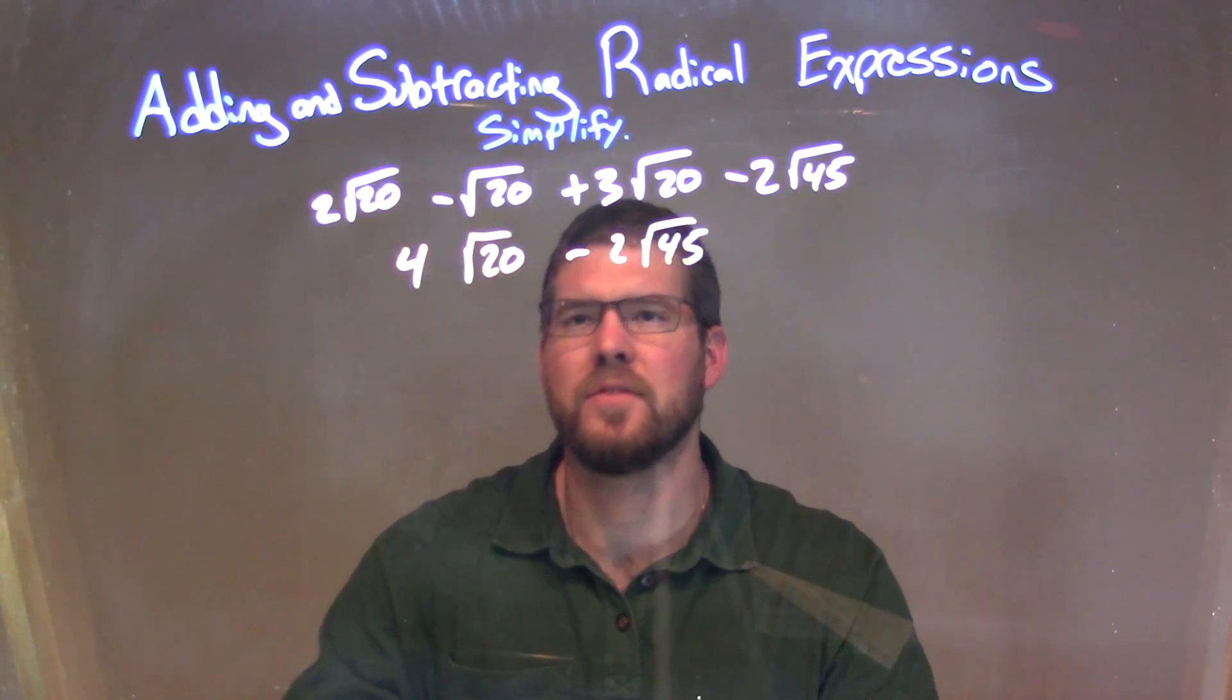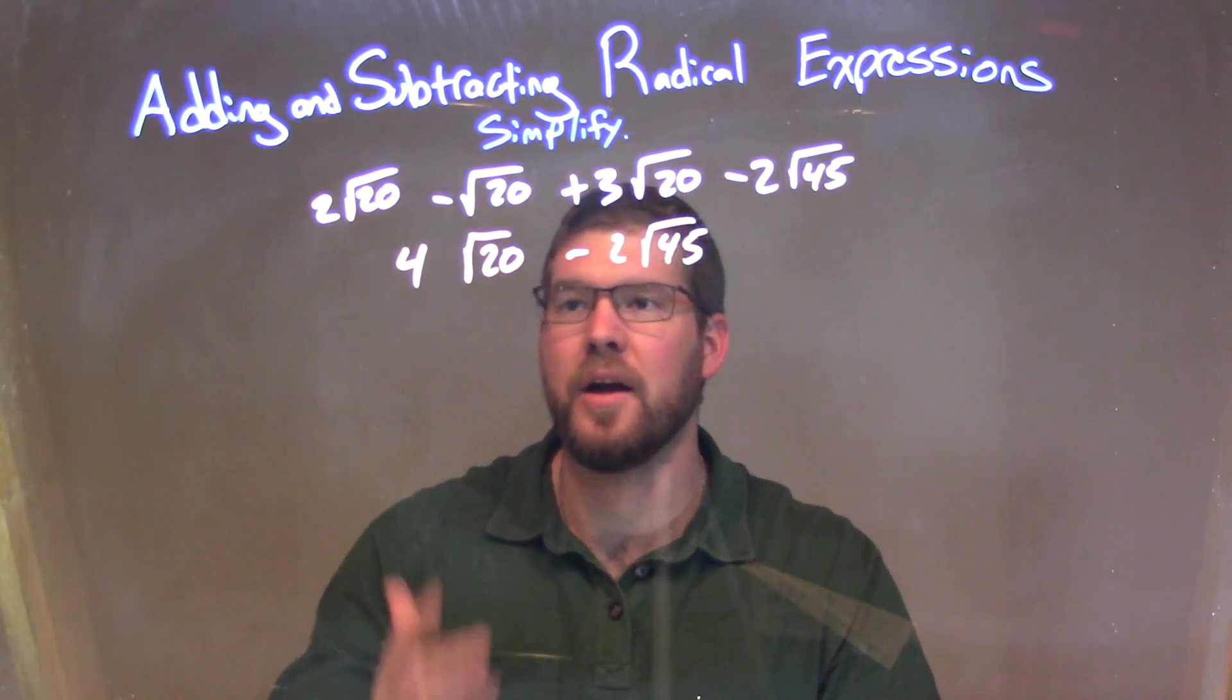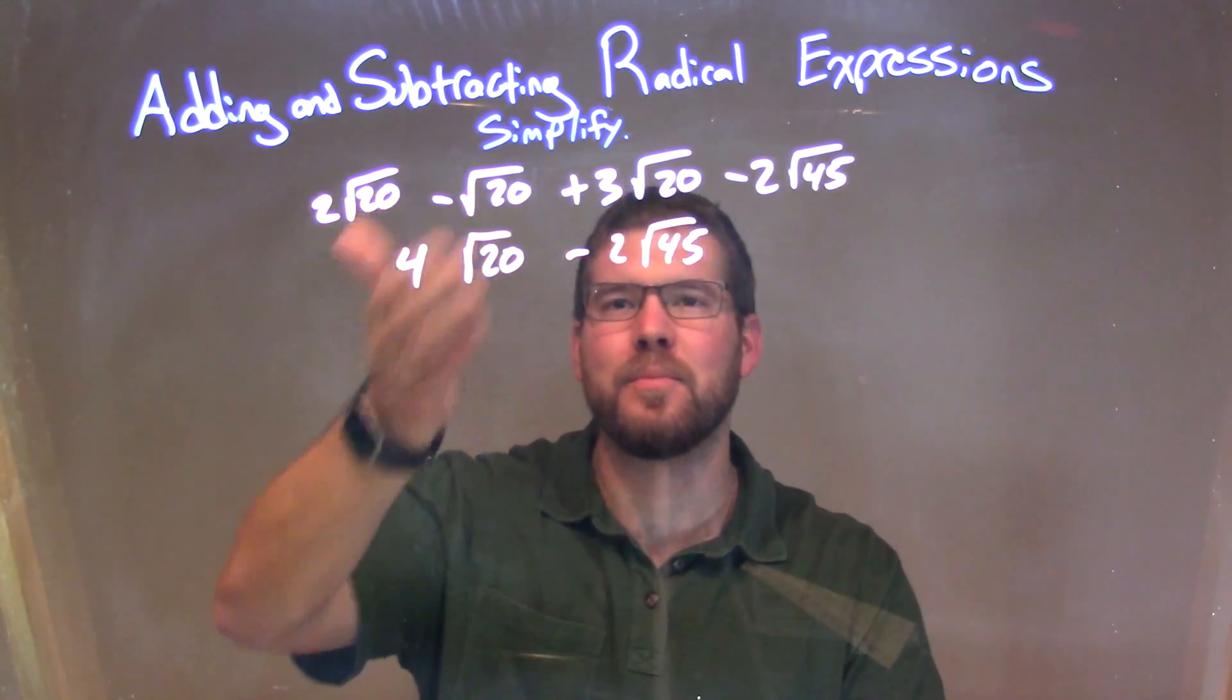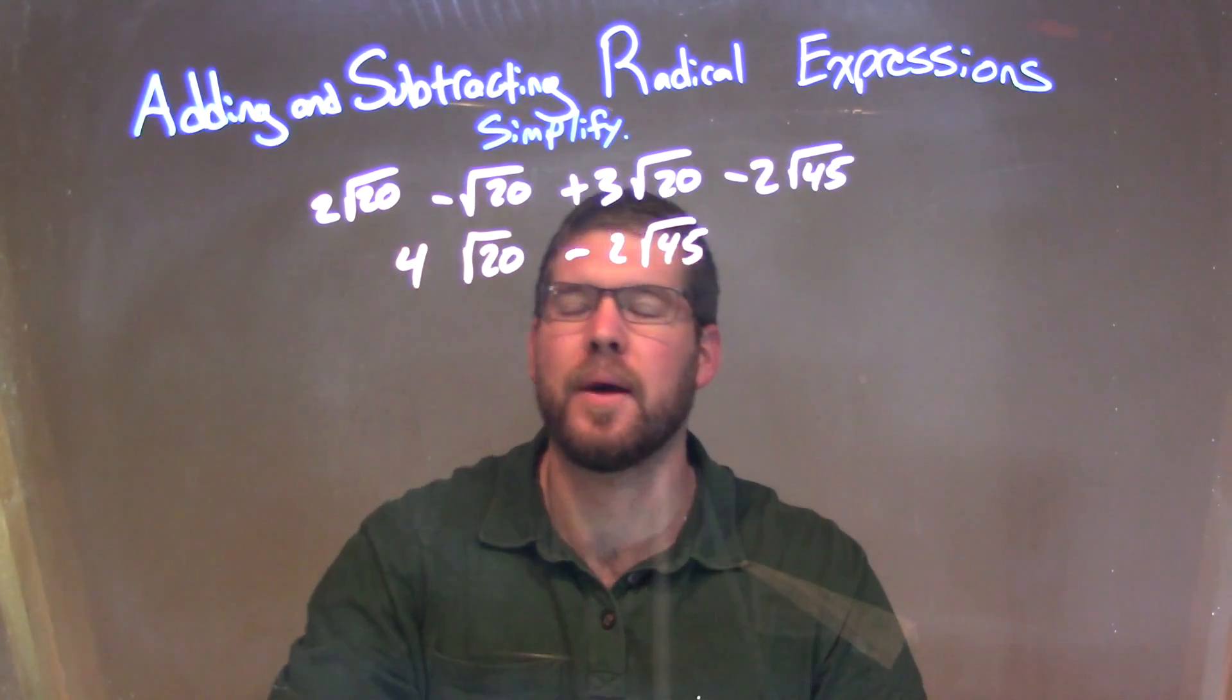The reason why I'm doing this now, instead of simplifying each square root right now, is I know I can combine them. It makes it easier; it makes me not have to break down 3 of the same thing.